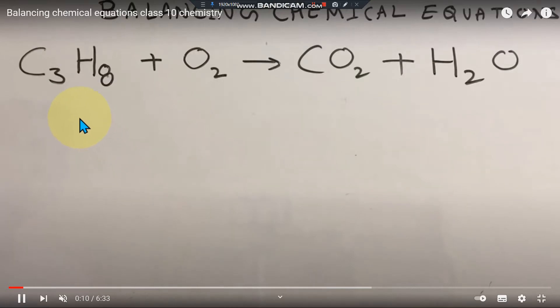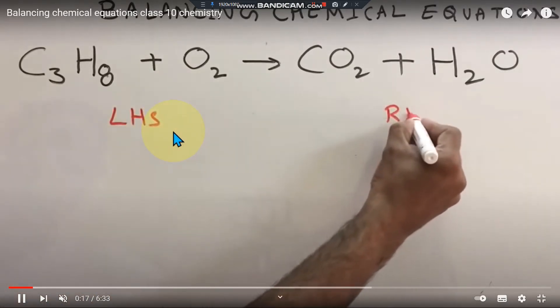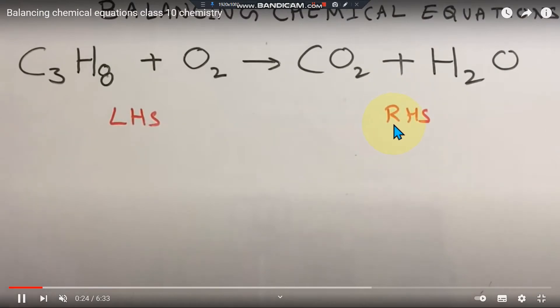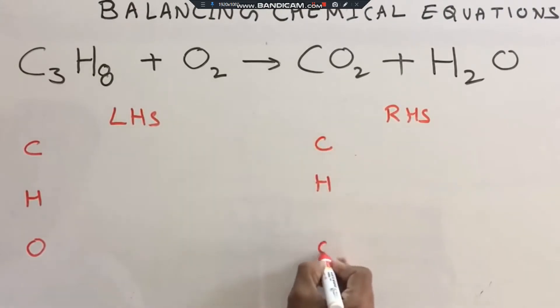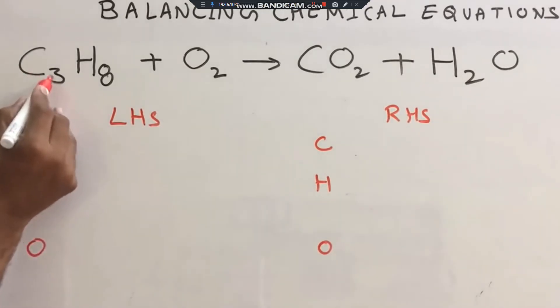On the left hand side, we have elements - left hand side and right hand side. So left hand side, we have reactants, and right hand side we have products. On the left hand side we have carbon, hydrogen, and oxygen. On the right hand side we also have carbon, hydrogen, and oxygen. The same elements on left hand side and right hand side.